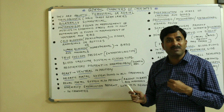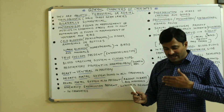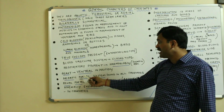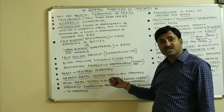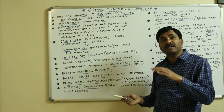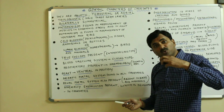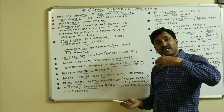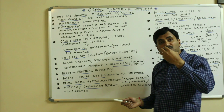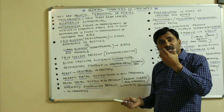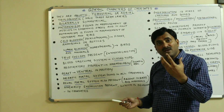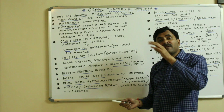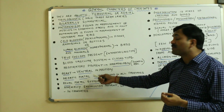The heart is ventral in position — for example, in human beings, which are also chordates, we have a ventral heart. Chordates also have a hepatic portal system, which means all toxic substances carried by veins do not open directly into the heart; first they open into the liver, where toxic substances are removed, and then the blood is carried to the heart.